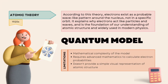According to the quantum model, electrons exist as a probable wave-like pattern around the nucleus, not in a specific orbit. It explains why electrons act as both particles and waves, and is the foundation of our understanding of atomic structure, widely used in modern physics. Limitations include: the mathematical complexity requires advanced mathematics to calculate electron probabilities, and it doesn't provide a simple visual representation of atomic structure.